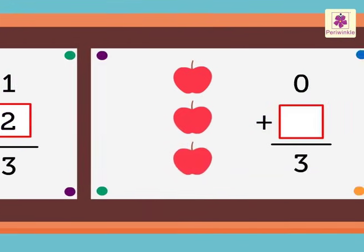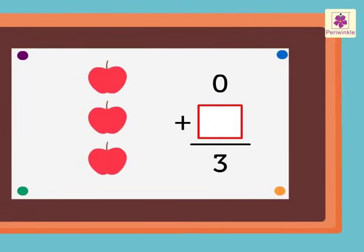In the last addition, again, the sum is three. And the given addend is zero. We don't hide any apples. And thus, we get the missing addend. Three. Zero plus three is equal to three.